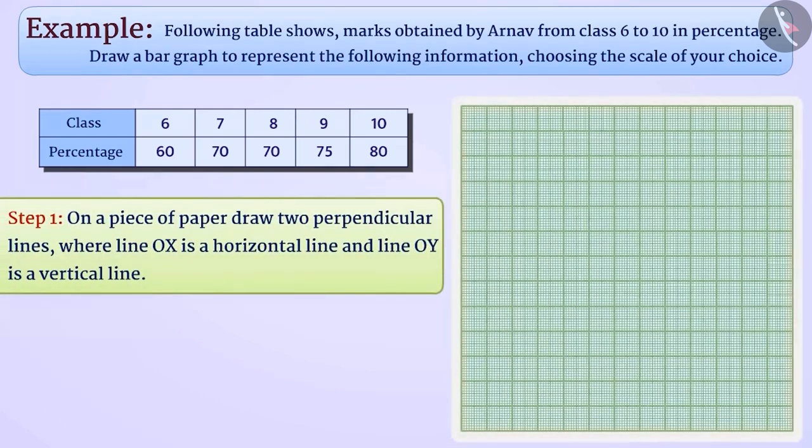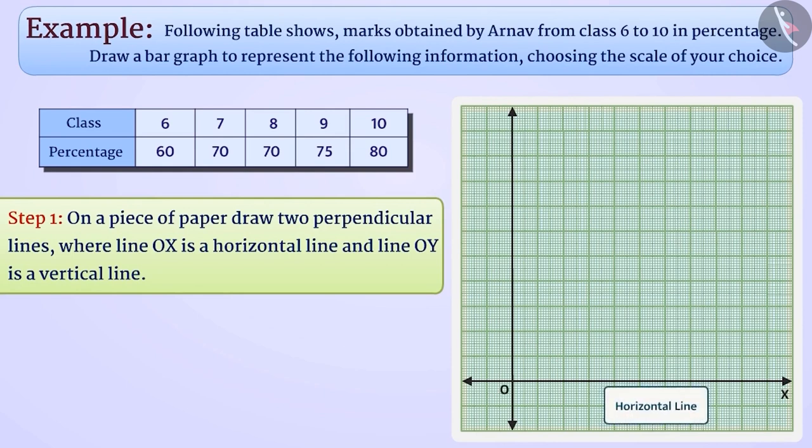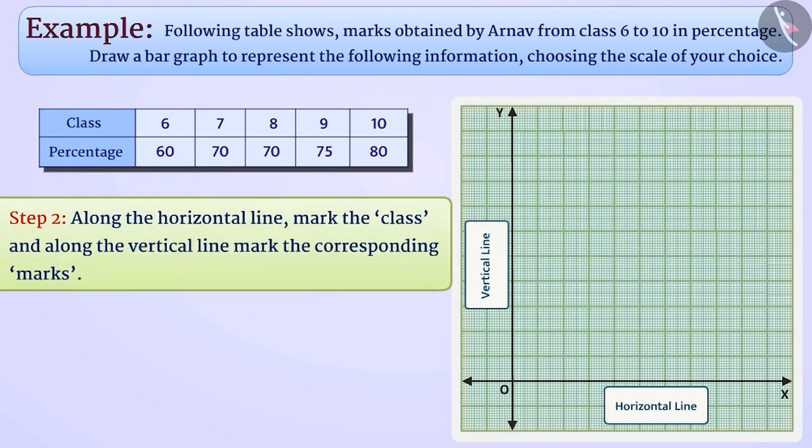Step 1: On a piece of paper, draw two perpendicular lines where line OX is a horizontal line and line OY is a vertical line. Step 2: Along the horizontal line we will mark the class and along the vertical line mark the corresponding marks.